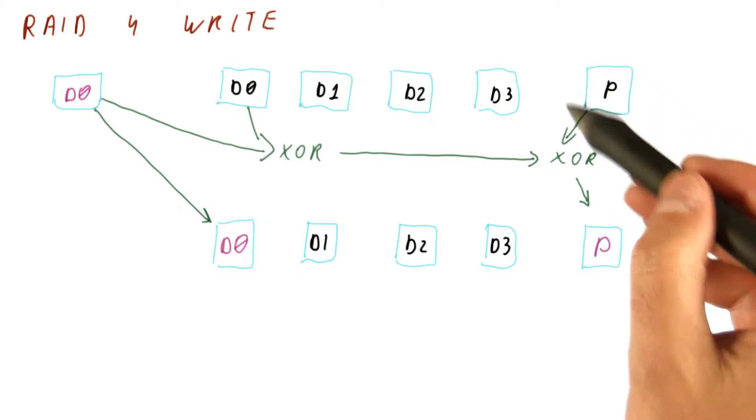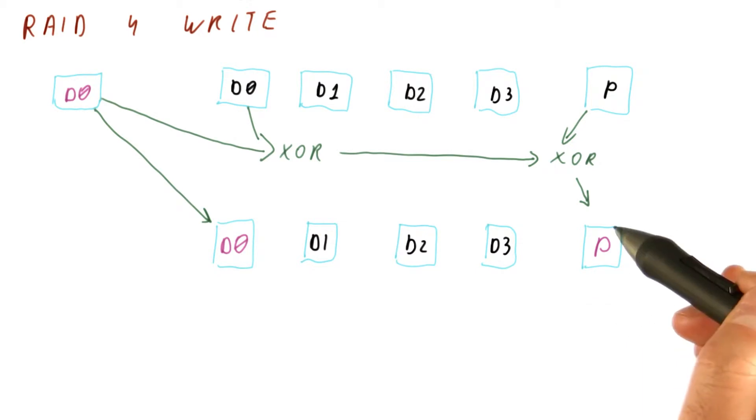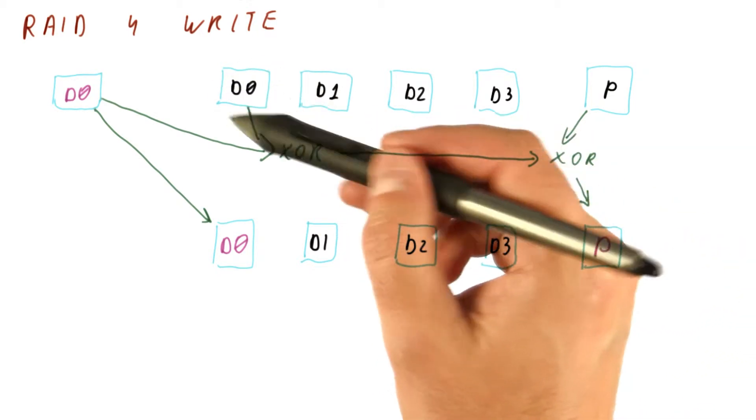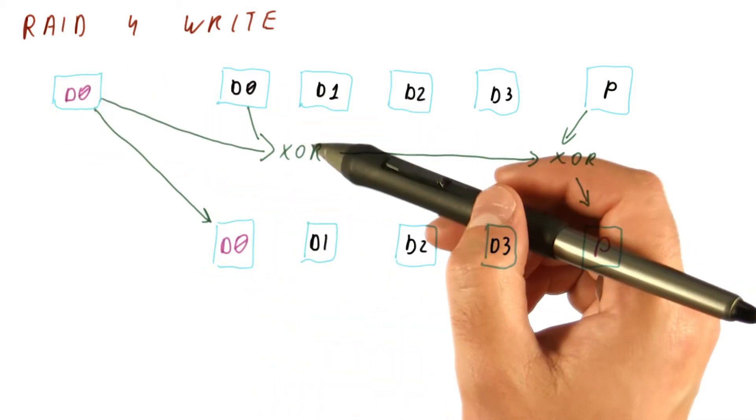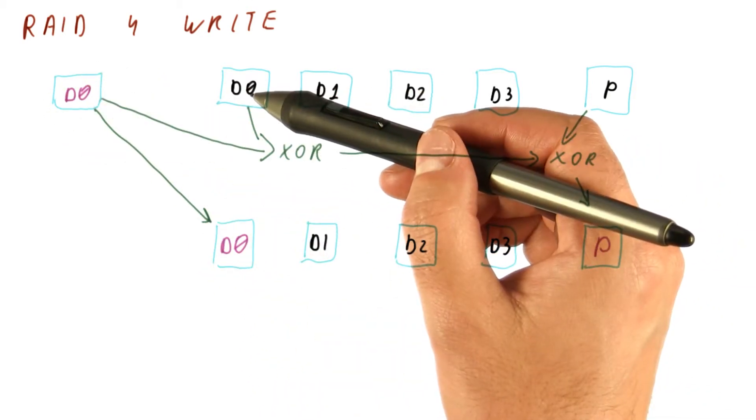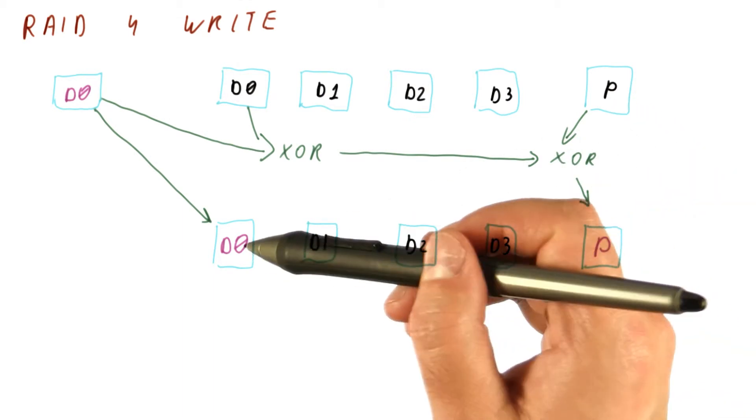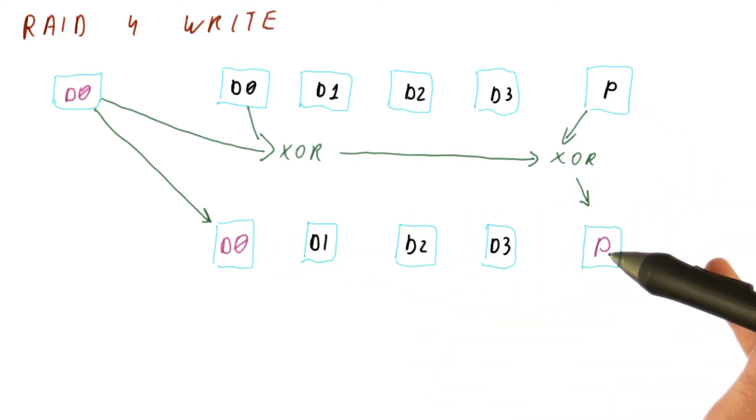So that's why we have a read and a write of the old parity. In addition, we have a read of the old data if we don't already know it. And we know the new data. So basically, we have a read from the data disk, a read from the parity disk, a write to the data disk, and a write to the parity disk.